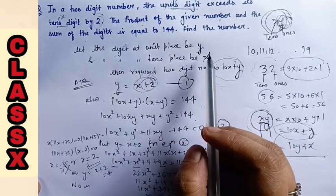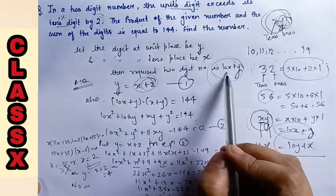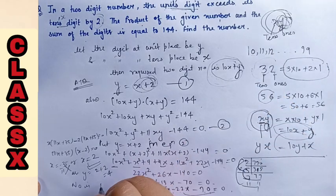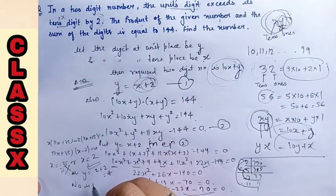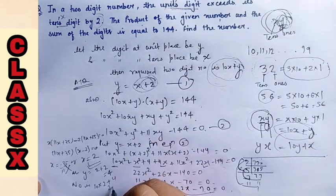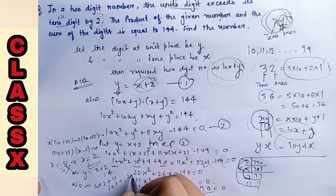So the number is, number is what? 10x plus y. Put x as 2 and y as 4. So 10 into 2 plus 4, so 20 plus 4 is 24.